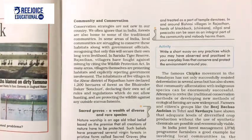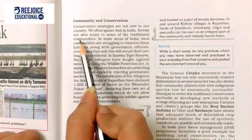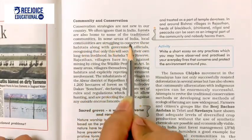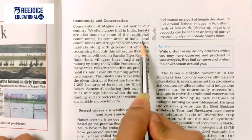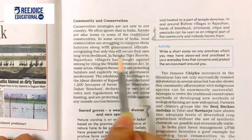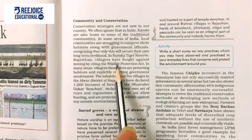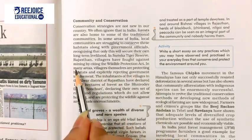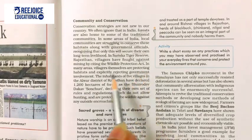We are now on page 21: Community and Conservation. Conservation strategies are not new in our country. We often ignore that in India, forests are also home to some traditional communities — including tribal people. In some areas of India, local communities are struggling to conserve these habitats along with government officials, recognizing that only with this will they secure their own long-term livelihood. In Sariska Tiger Reserve, Rajasthan, villagers have fought against mining by citing the Wildlife Protection Act.